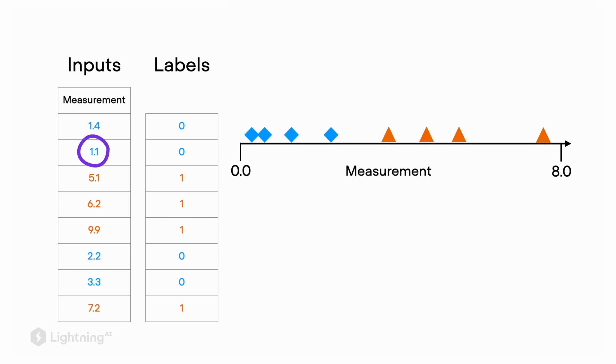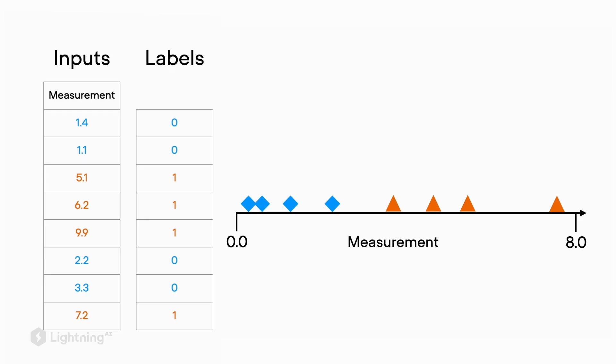For example, if we look at the measurement 1.1, this would correspond to this first point here, and so forth. Now that we have a labeled dataset, the goal is to predict whether a new data point belongs to the blue diamond or the orange triangle class. For that, we need a decision boundary.